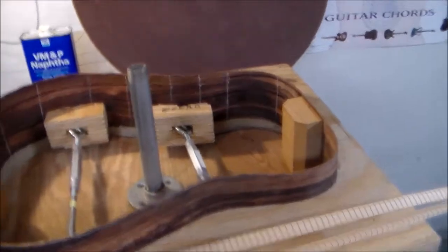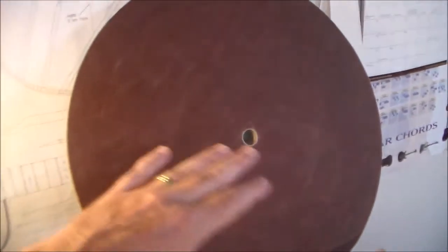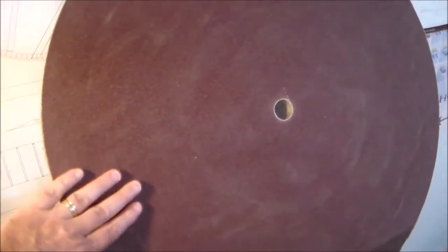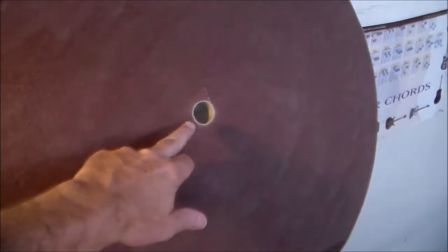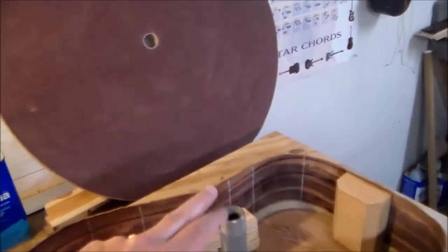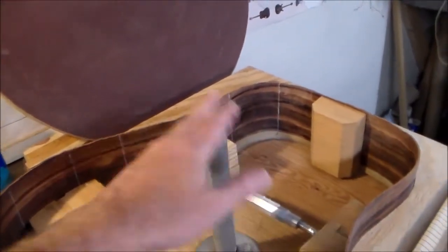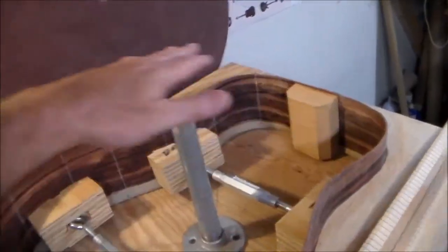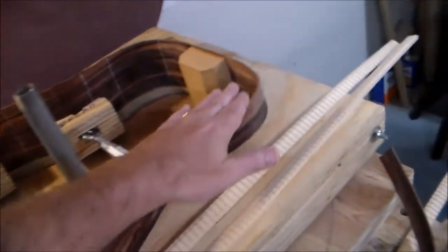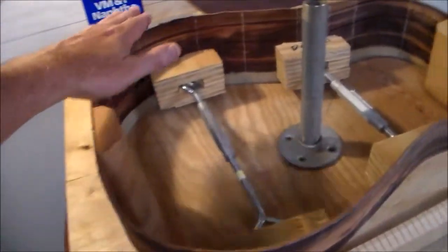What we're going to do now is we've got this radius dish, and this is for the back of the guitar, so it's a 15-foot radius and this has coarse sandpaper, I believe it's 60 or 80 grit sandpaper. What we're going to do is where we've got the hole here, we're going to put that over this pipe and that's going to allow us to sand the correct radius onto the back of the guitar.